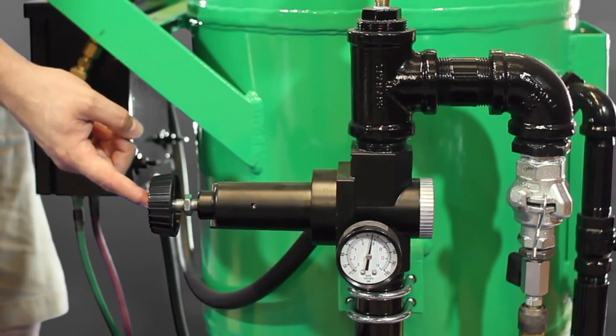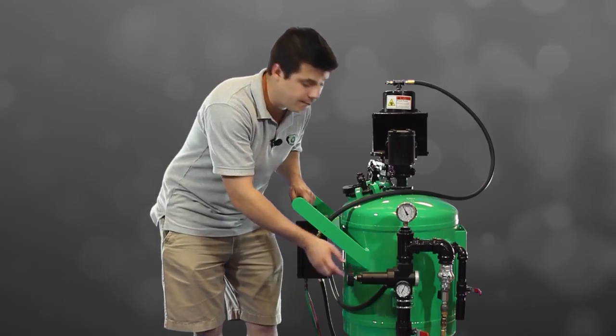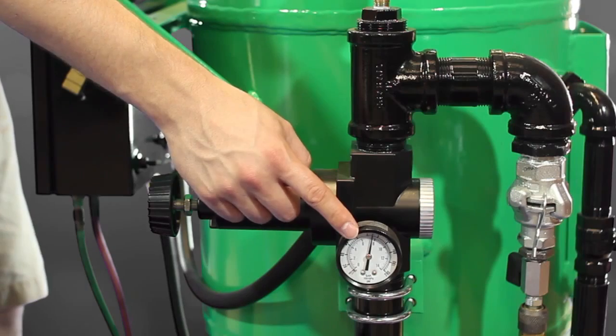This is the pressure regulator, and as you might guess, it regulates the pressure going into the blast tank. This is the blast pressure gauge, and the reading on it will reflect the blast pressure.